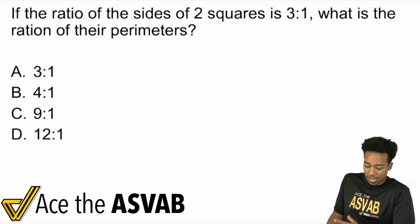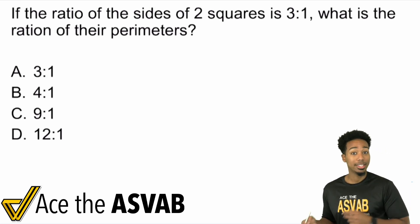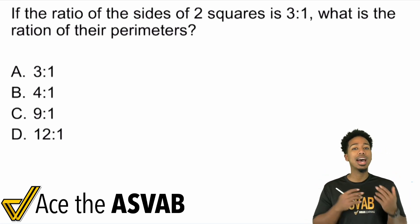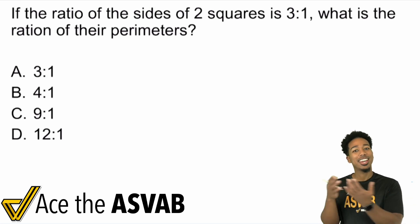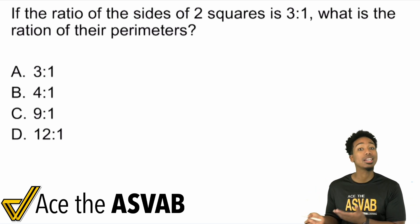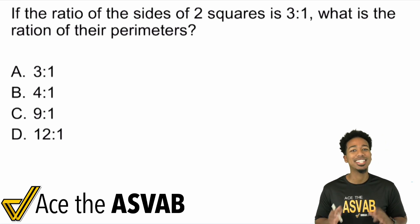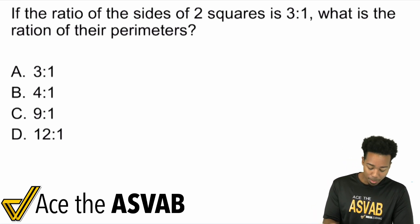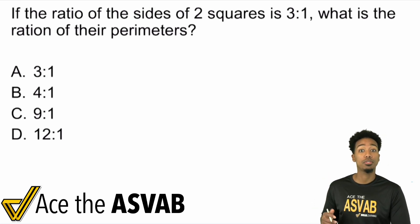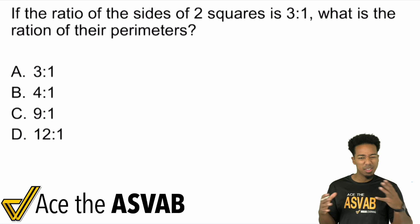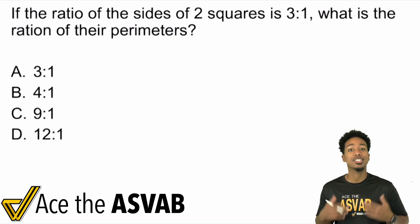So it says here: the ratio of the sides of two squares is 3:1. What is the ratio of their perimeters? This is a challenge question because not everybody understands how ratios and geometry really blend in. Here's the thing - what is perimeter? Perimeter is pretty much adding up all the sides. Let me show you how to get this done nice and easy. One way to solve these challenge questions, these kind of abstract, kind of weird questions, is you can use examples to see what this is.